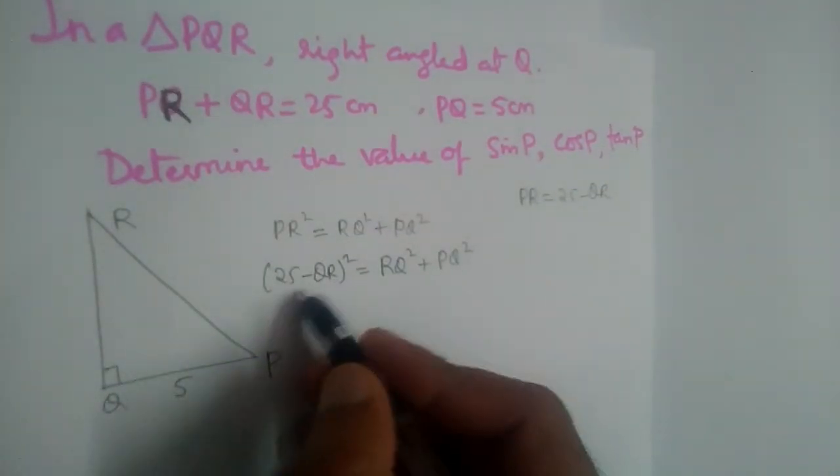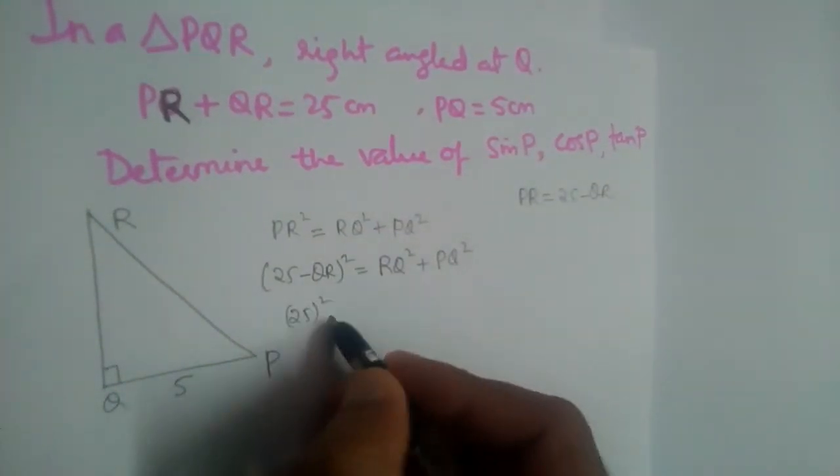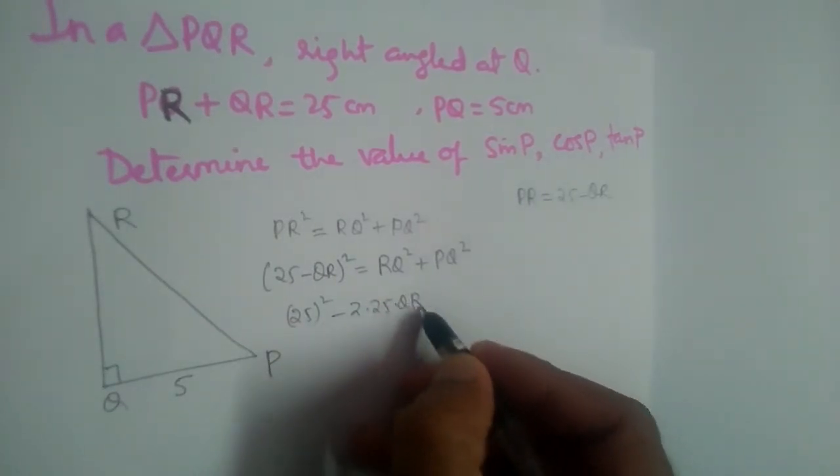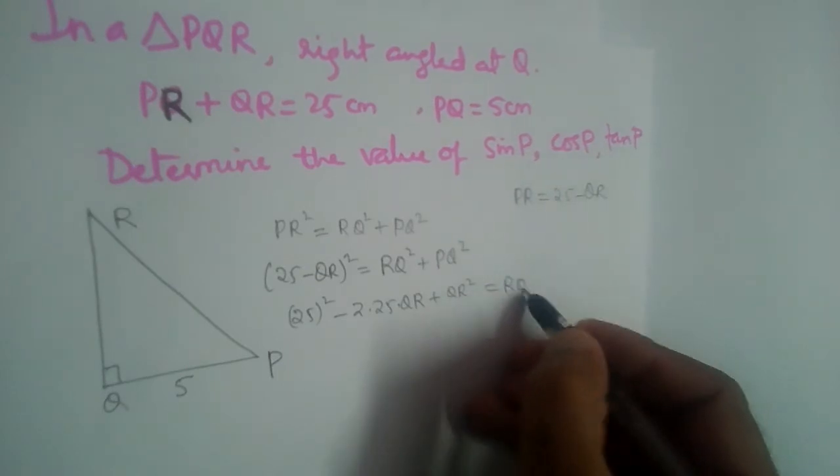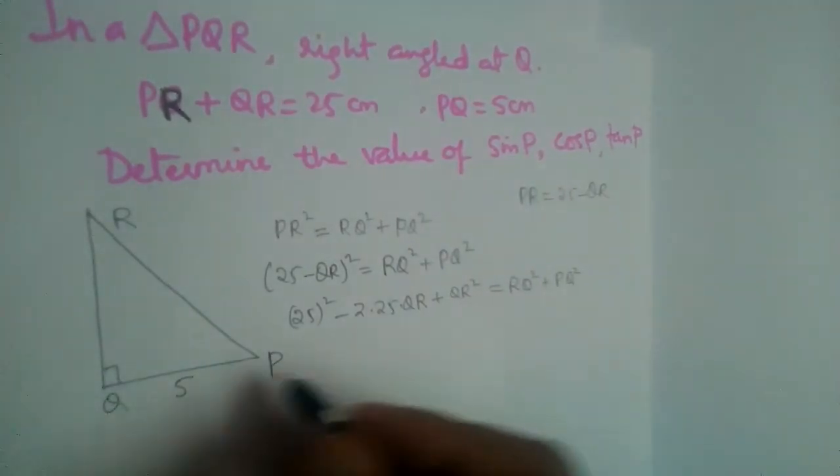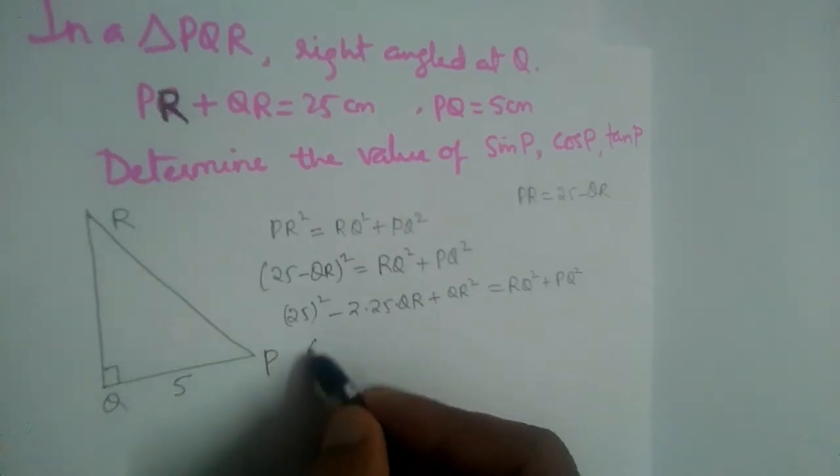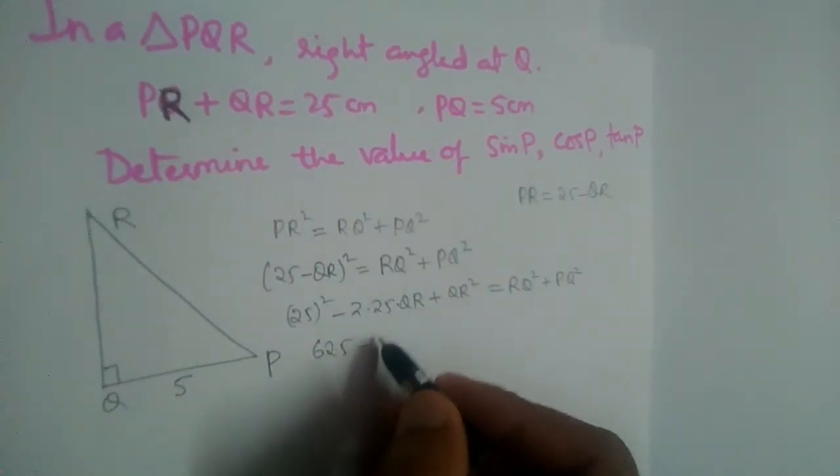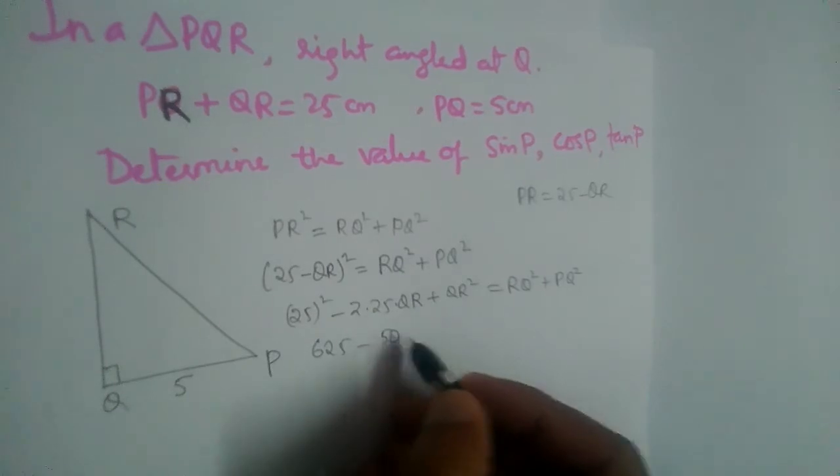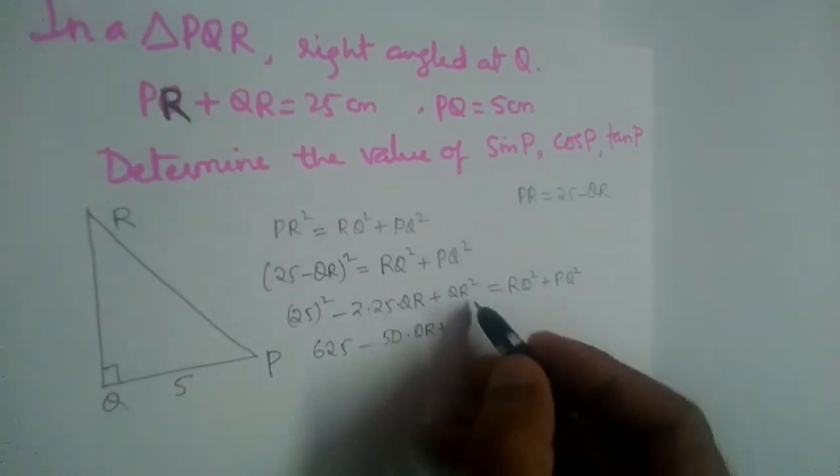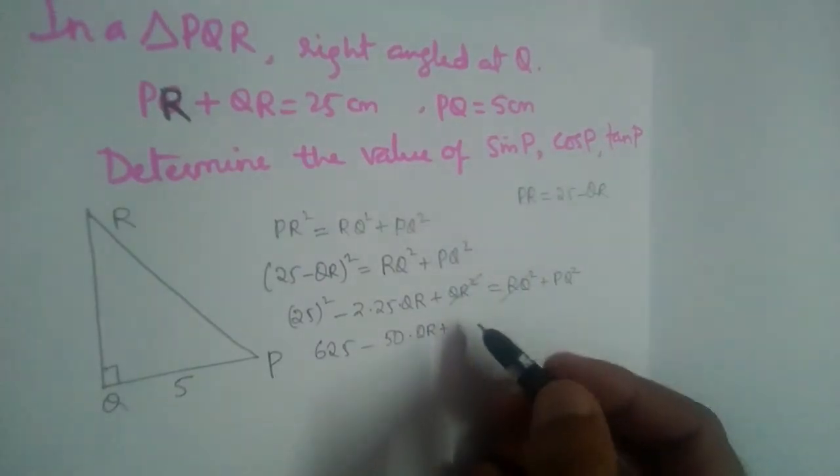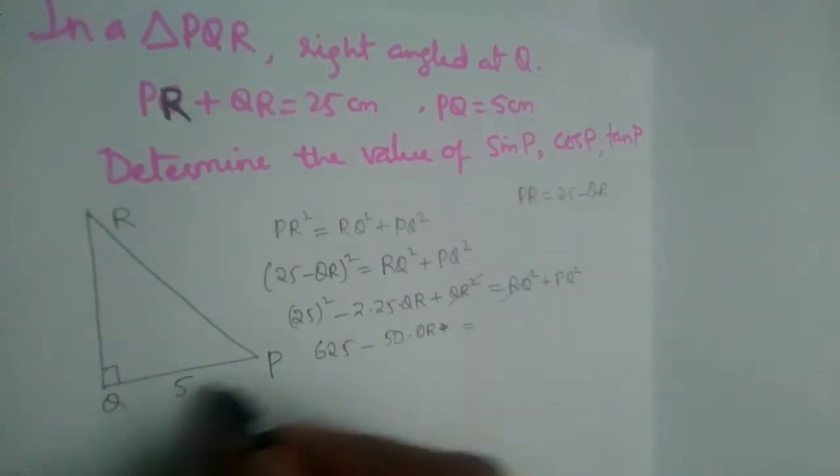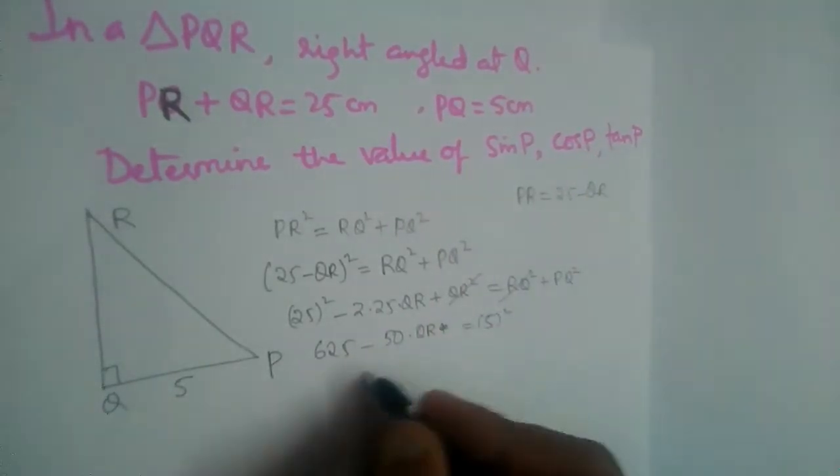Now (A - B)² = A² - 2AB + B² = RQ² + PQ². 25² is 625, minus 50 into QR plus... See here QR and RQ, these two are same. They will get cancelled, is equal to PQ². PQ is 5, so this will become 5², which is 25.